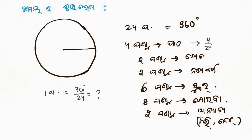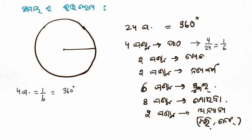4 hours divided by 24. So 4 out of 24 hours is 1/6. One-sixth part of 360 degrees. So 4 hours corresponds to 60 degrees.